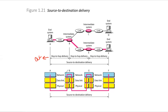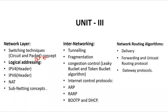The source-to-destination delivery is achieved by sending data through intermediate switches. The data link layer handles hop-to-hop delivery from one node to another within the same network, but the network layer handles source-to-destination delivery. For example, if network A is sending to network F, it will select a route — either A-B-E-F or A-B-C-D — based on time or distance.